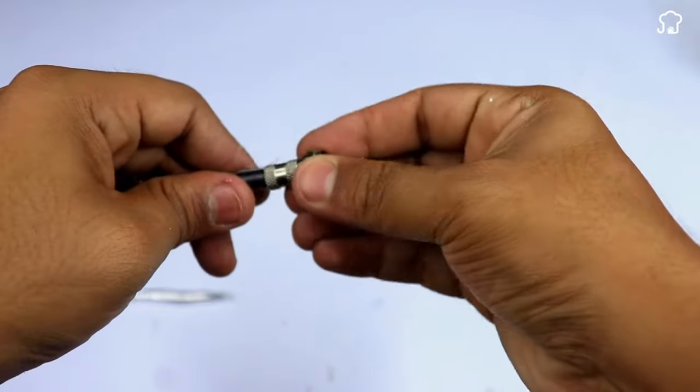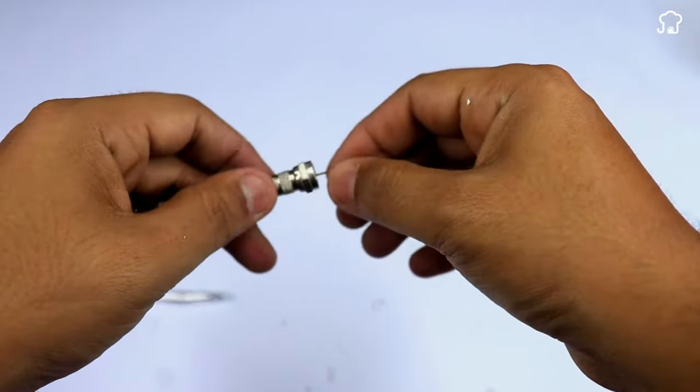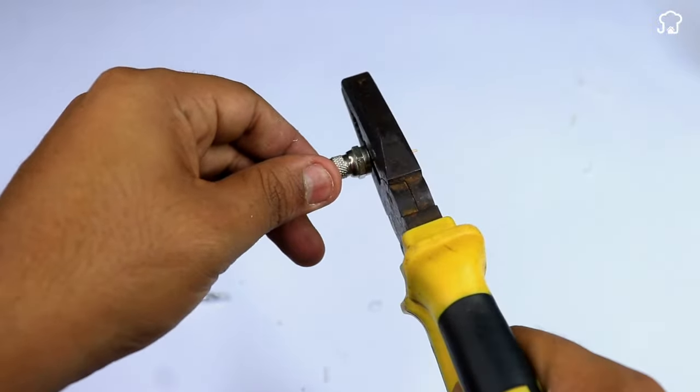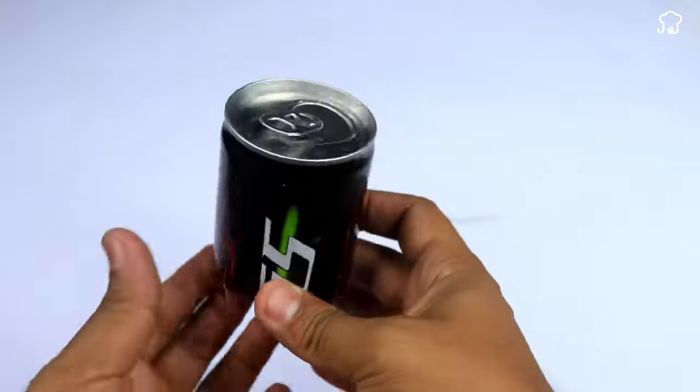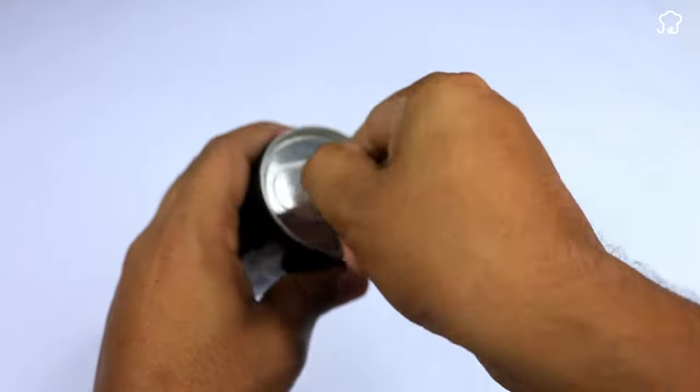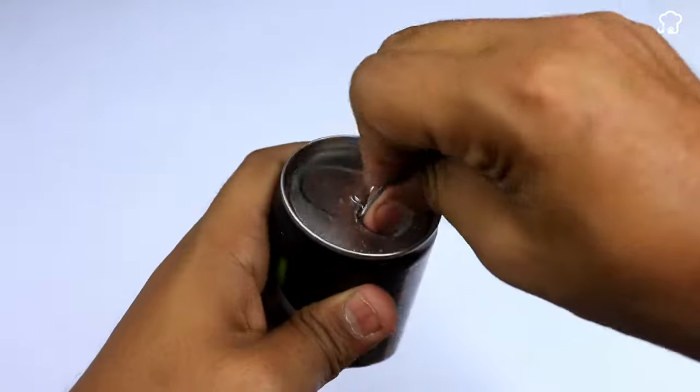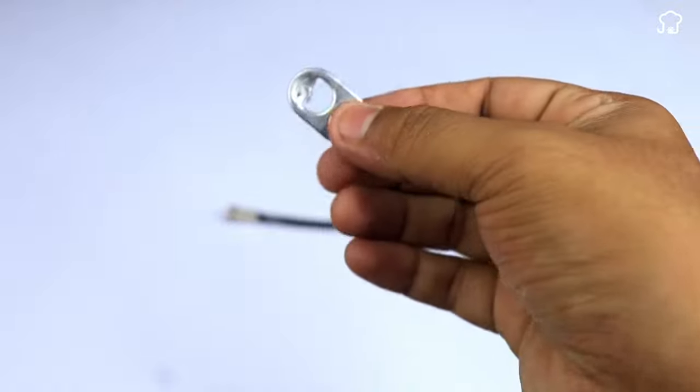We will take a female TV coaxial adapter and connect it to the cable. Next, we take the other end of the can that we had reserved and remove the seal of the can. Now we put the cable between the holes in the seal, and with tweezers we tighten well so that it is fixed.